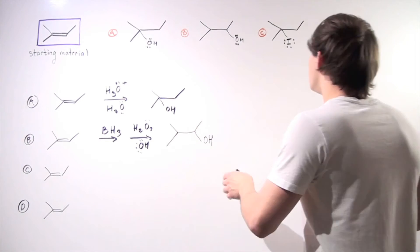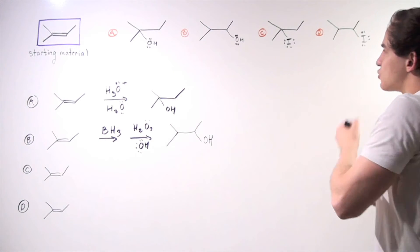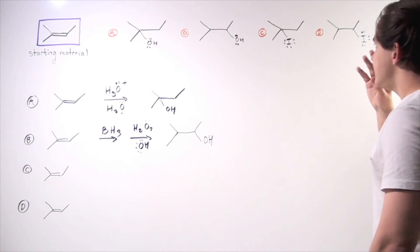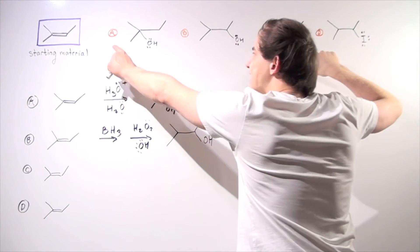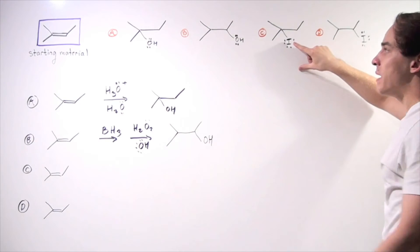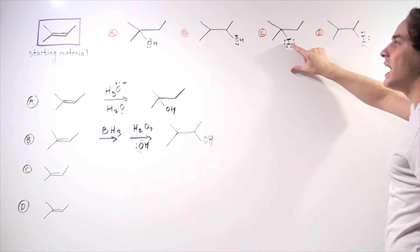So now let's produce our product C. So let's examine what product C is. Well, notice this is very similar to A, except this group has been replaced with an iodine.